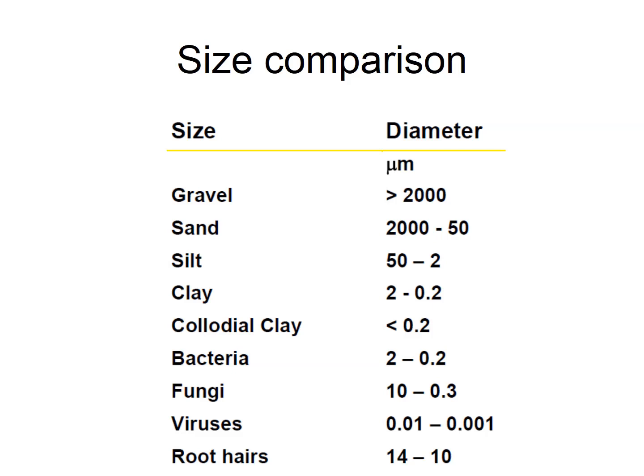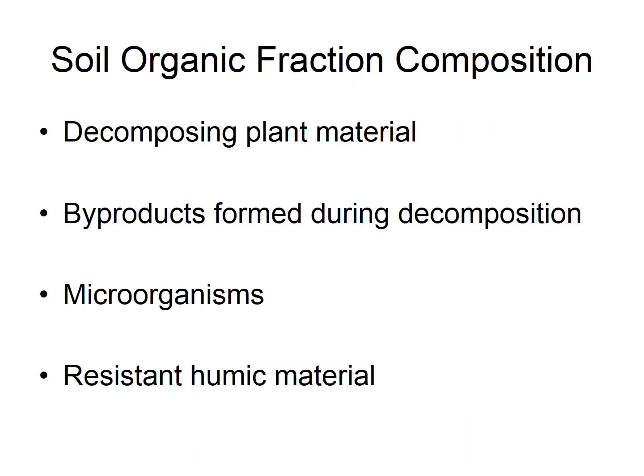Microbes in general feed on organic material and can assimilate organics. The organic fraction in the soil comes from decomposing plant material and byproducts produced during decomposition. It also comes from decaying microorganisms — when microbes die, their cellular compartments become part of the organic matter pool. This material starts to decompose and eventually reaches a state where it resists further biological degradation. This is usually referred to as humic material.